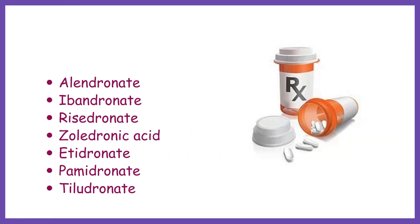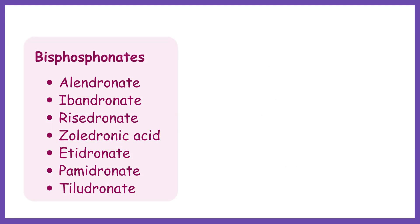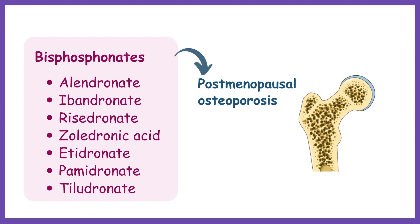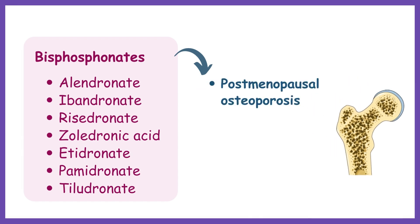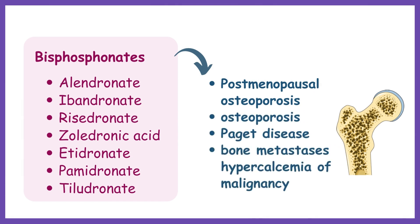Medicines such as alendronate, ibandronate, risedronate, zoledronic acid, etidronate, pamidronate, and tiludronate belong to the class of bisphosphonates. Bisphosphonates are the preferred agents for prevention and treatment of postmenopausal osteoporosis. They are also used for treatment of bone disorders such as osteoporosis and Paget's disease, as well as for treatment of bone metastases and hypercalcemia of malignancy.